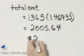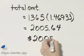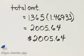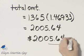What does that mean in the context of our problem? That means that after five years, the amount in the account will be $2005.64.